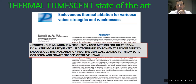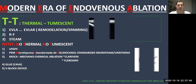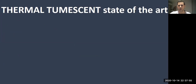Endovenous thermal ablation induces wall vein thrombotic occlusion and finally fibrosis of its wall. In the modern era of endovenous ablation, we have thermal and tumescent options such as laser, radiofrequency, and steam, and then non-thermal, non-tumescent options that I'm not going to refer to in this talk.